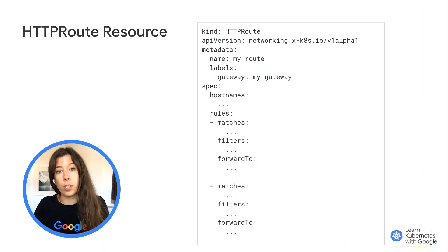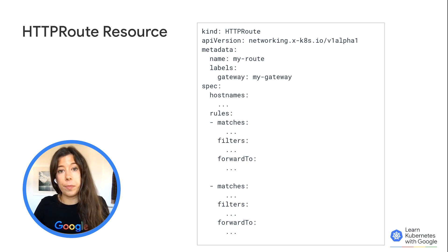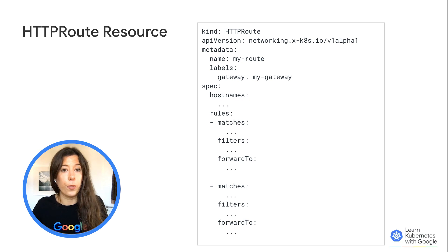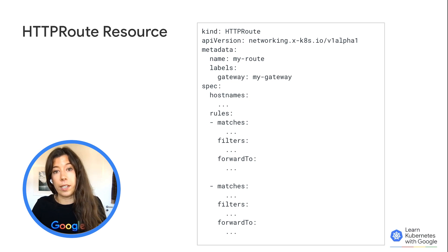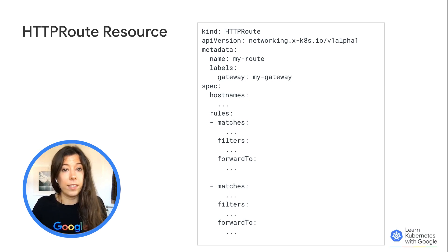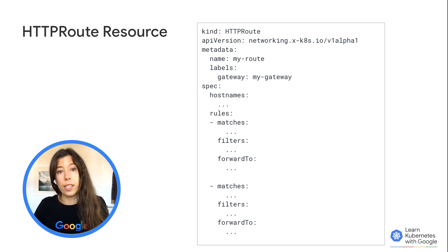First, let's take a look at the structure of the HTTP route resource. It defines the routing behavior within the Gateway API. Basically, it has four properties: hosts, matching, filters, and the destination. It's also important to point out how the label selector establishes which gateway the service will be exposed by. In this video, we'll be mainly focusing on the routing and traffic semantics within the HTTP route.